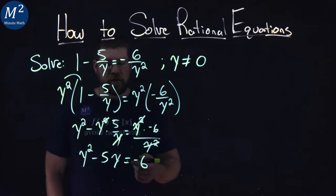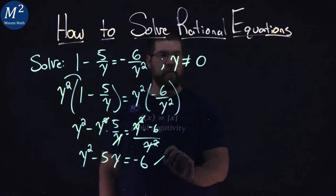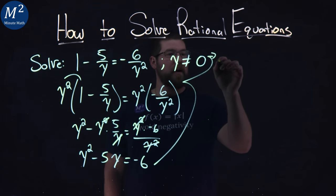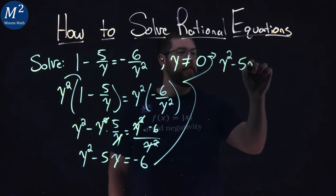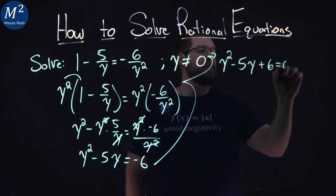If we bring that 6 over to the left-hand side, we're left with, I'll put it up here, we have y squared minus 5y plus 6 equals 0.